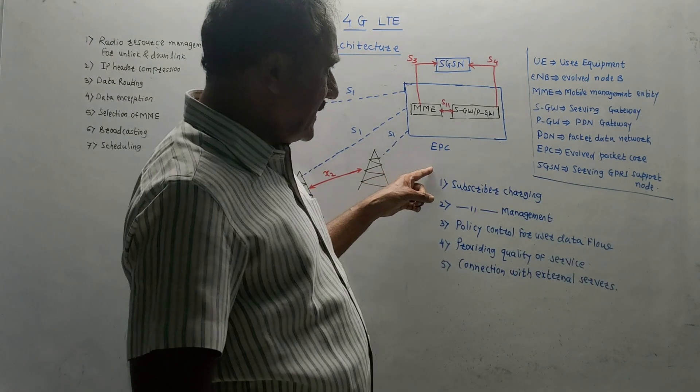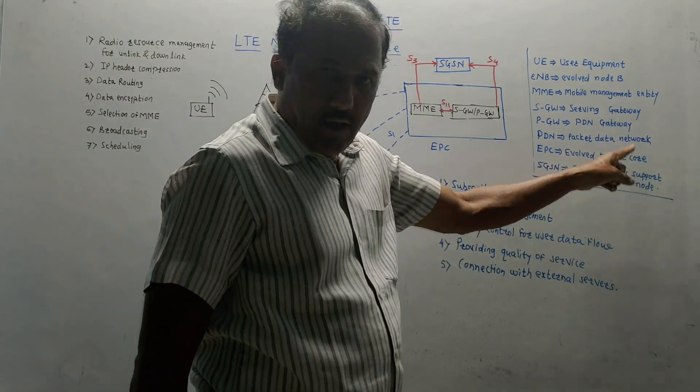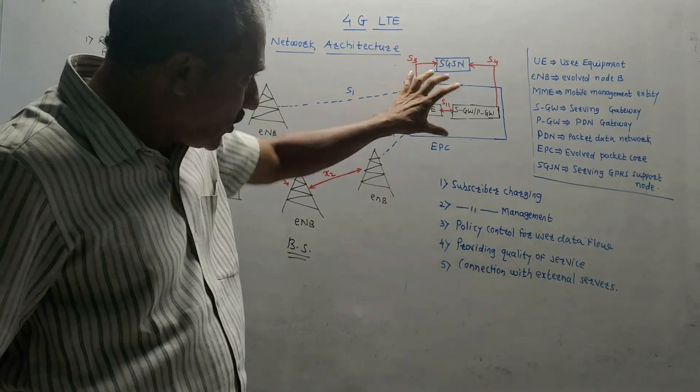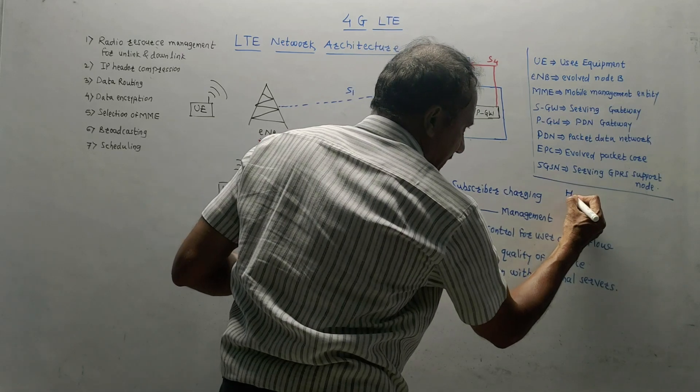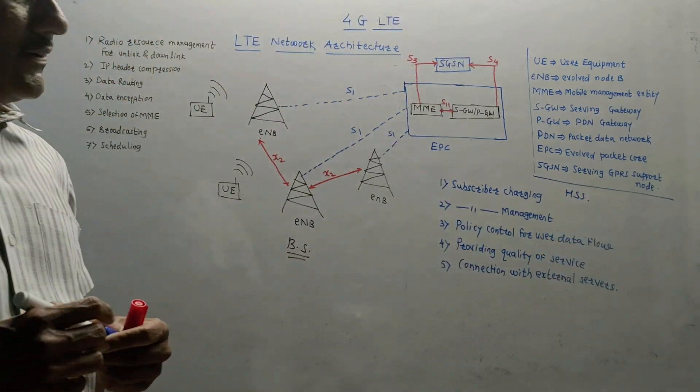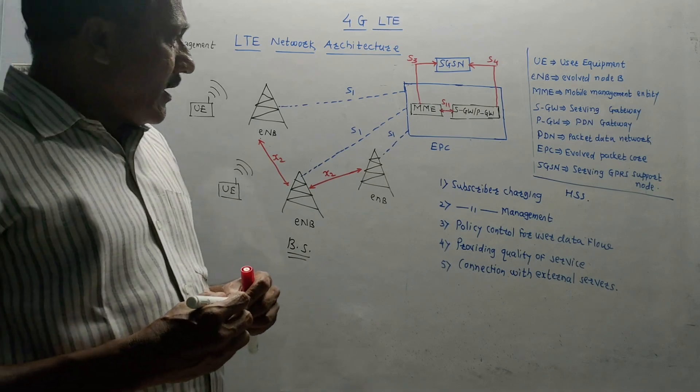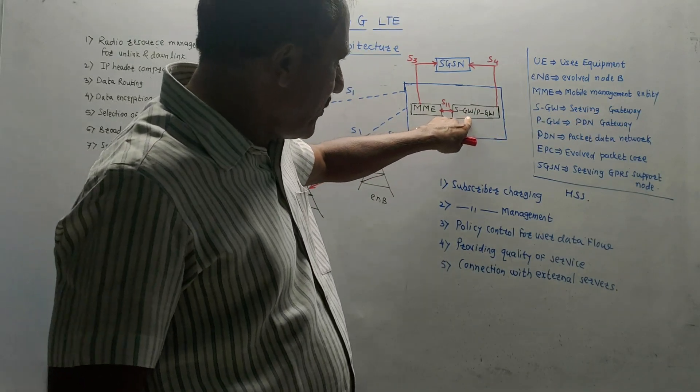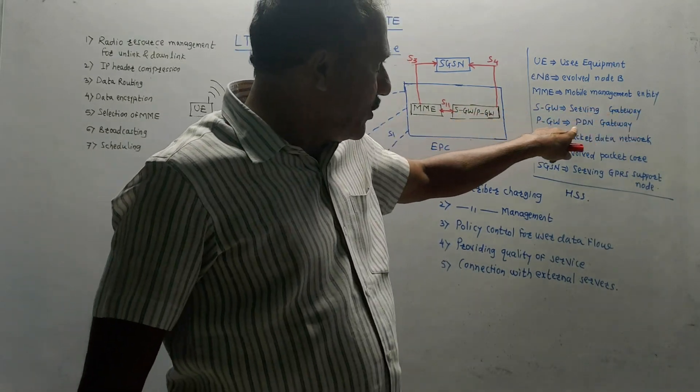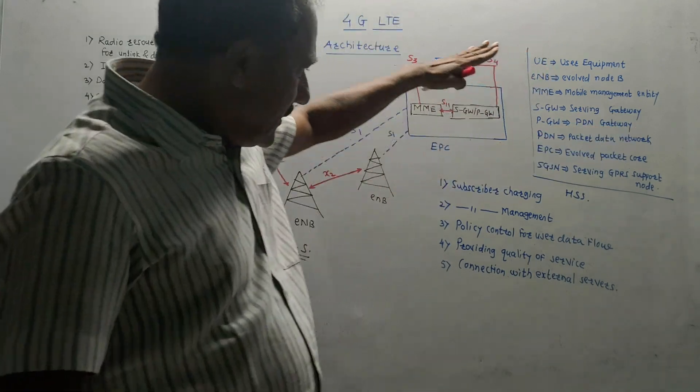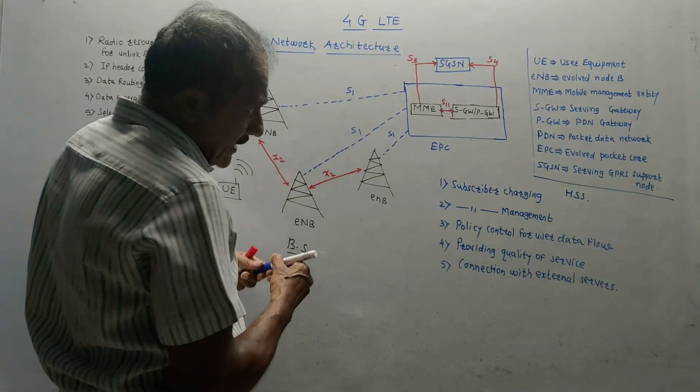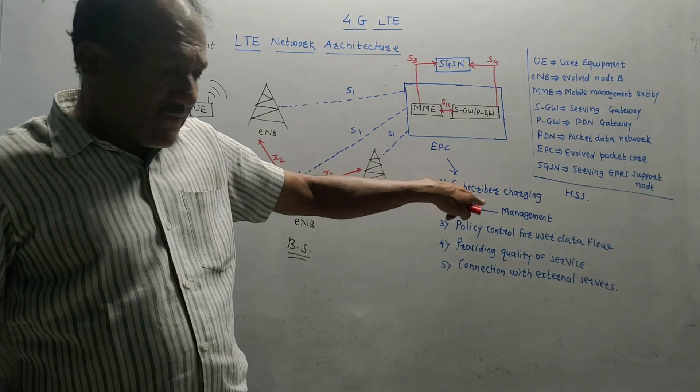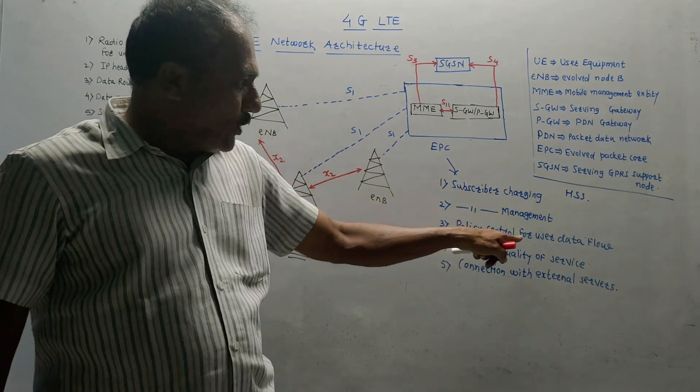Next part is EPC, that is evolved packet core. Actually, this EPC consists of three major parts. First is HSS, which is not shown in this diagram, that is home server system. Then it consists of MME, mobile management entity, and SGW, serving gateway, and PGW, PDN gateway. The major functions done by this EPC are: charging of subscribers, subscriber management, policy control of user data flow, providing quality of service, and connection with external servers.